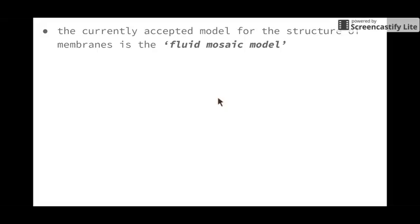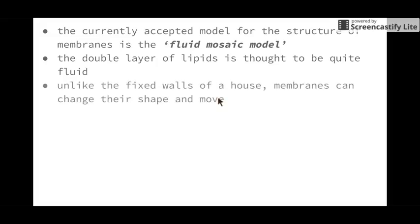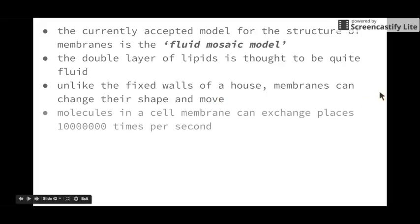The currently accepted model for the structure of the membrane is known as the fluid mosaic model. Basically, the double layer of lipids is thought to be quite fluid. When we think of something that's fluid, we think of something that flows. Unlike the fixed walls of a house, the cell membrane or plasma membrane is able to change its shape and move quite freely. Molecules in the cell membrane, such as proteins and glycoproteins, can change their place up to 10 million times per second because of this fluidity.